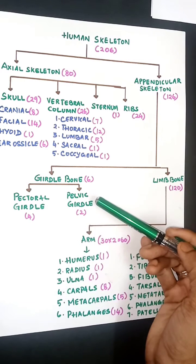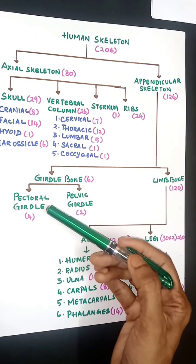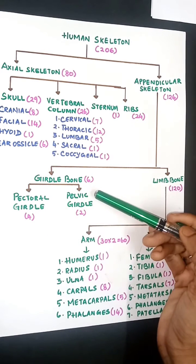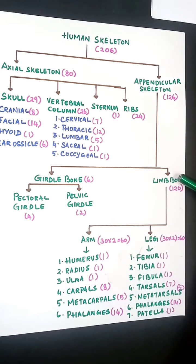Girdle bones include pectoral girdle and pelvic girdle. These are the shoulder bones and hip bones. Under shoulder bones, you have scapula and clavicle, totaling 4 bones. Under pelvic girdle, you have 2 bones. Under limb bones, I divide it into arm and leg, 60 and 60.